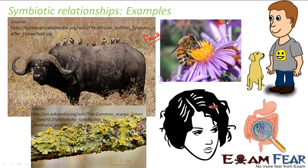Lichen is a symbiotic relationship between algae and fungi. The green colored structures are the algae and the yellow colored structures represent the fungi. They are both dependent on each other and cannot live on their own, making this an obligate relationship and also an example of ectosymbiosis.